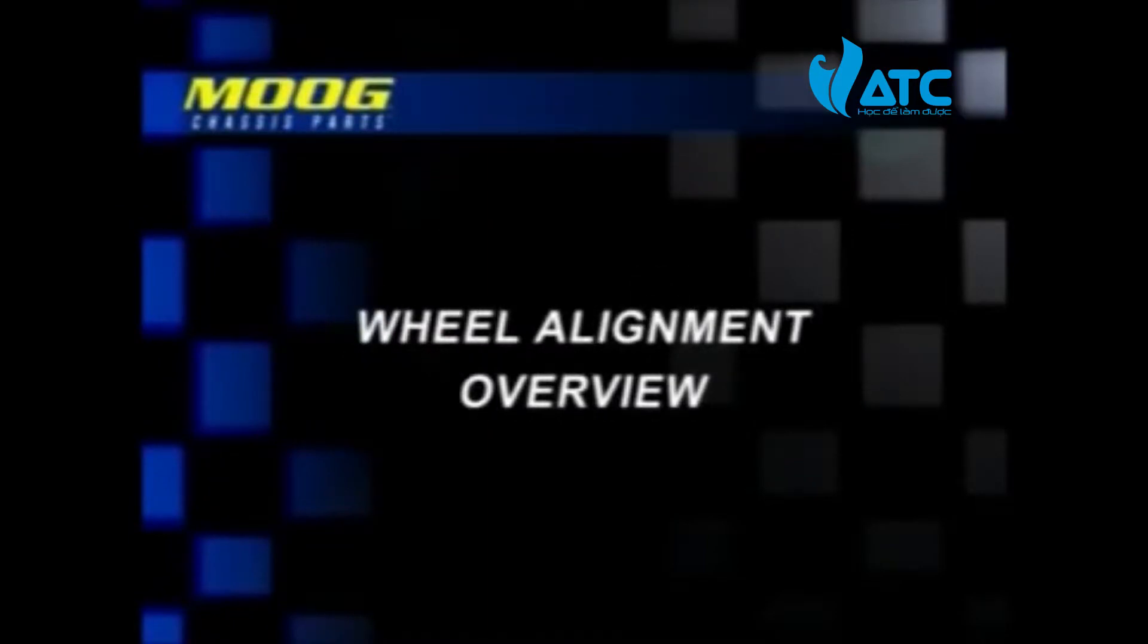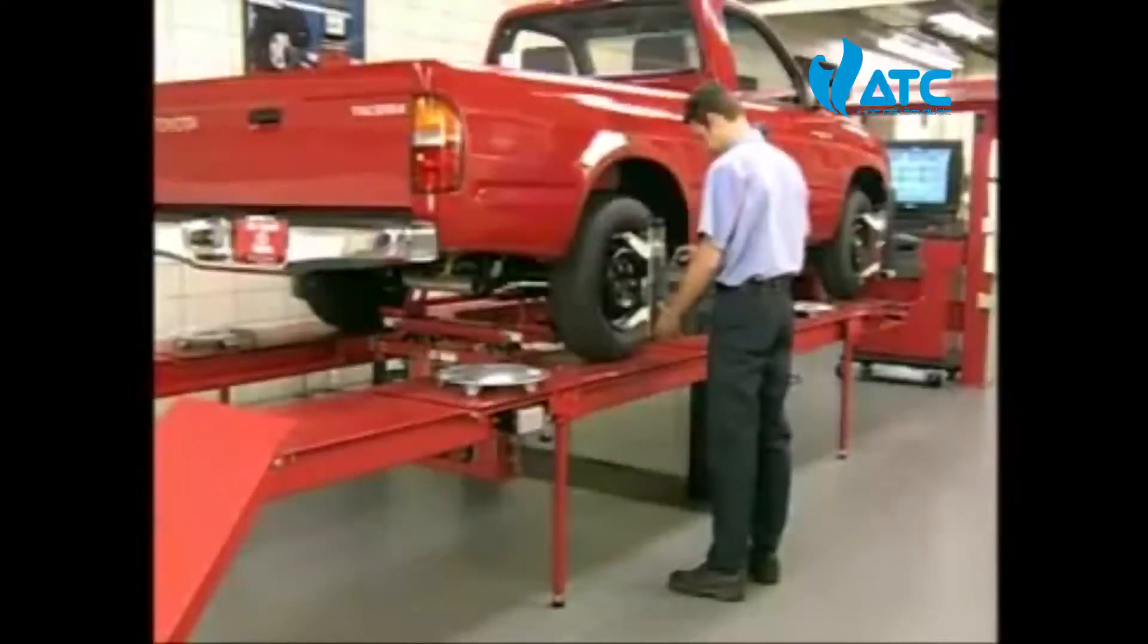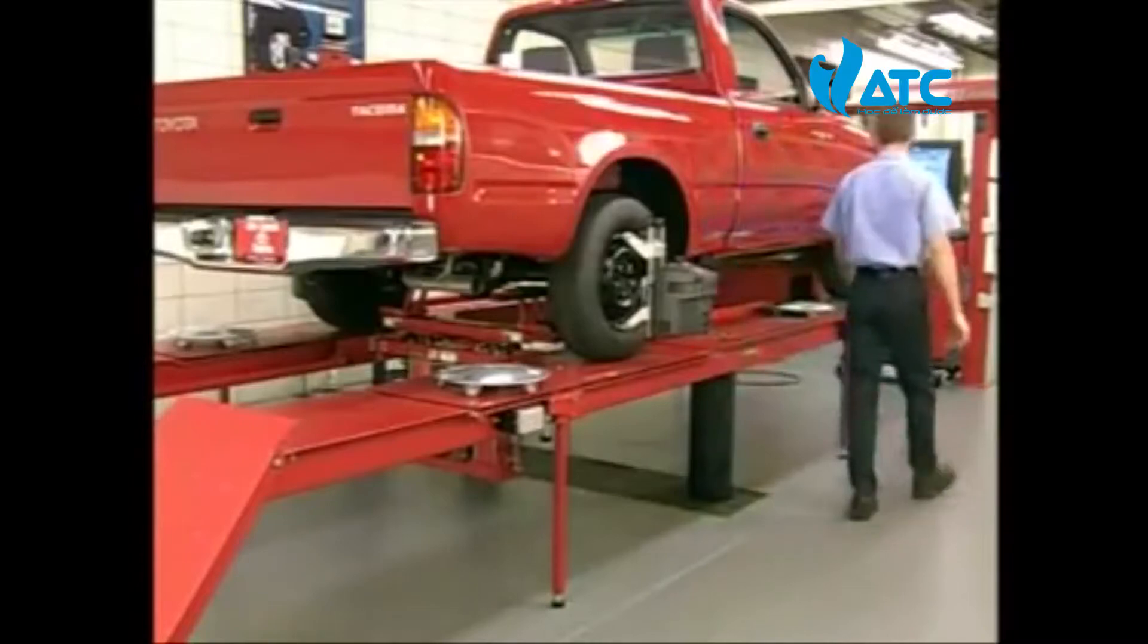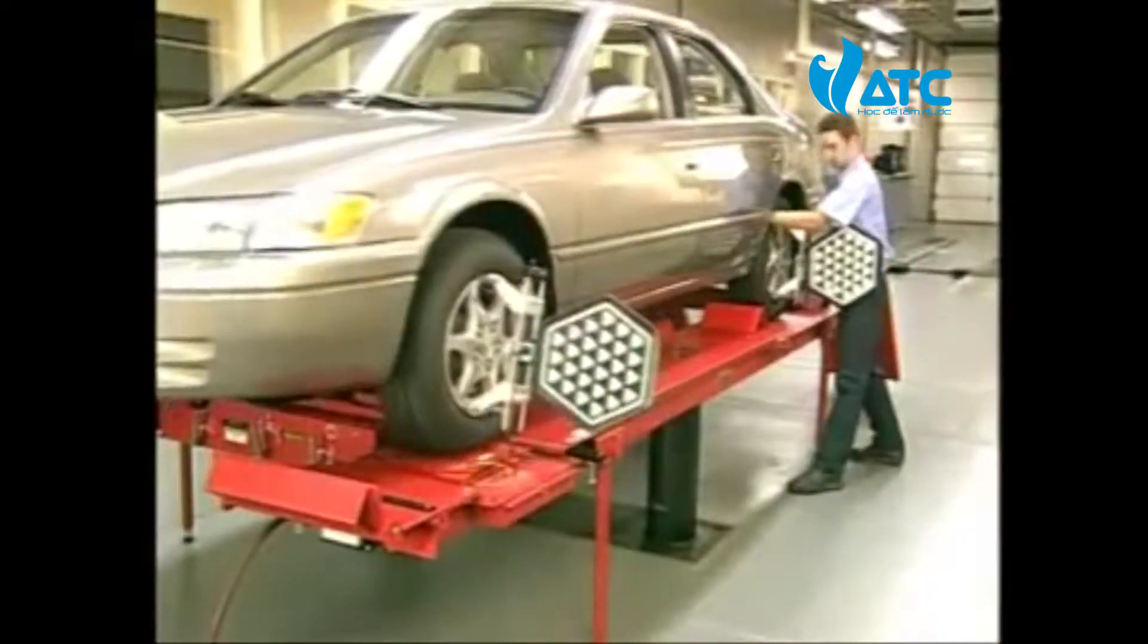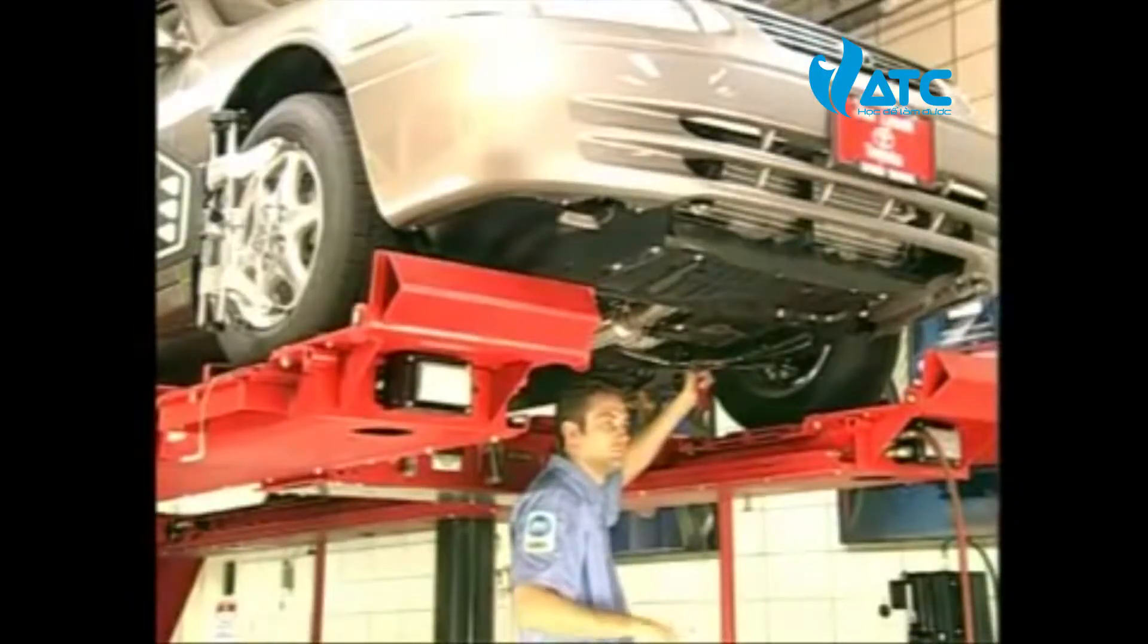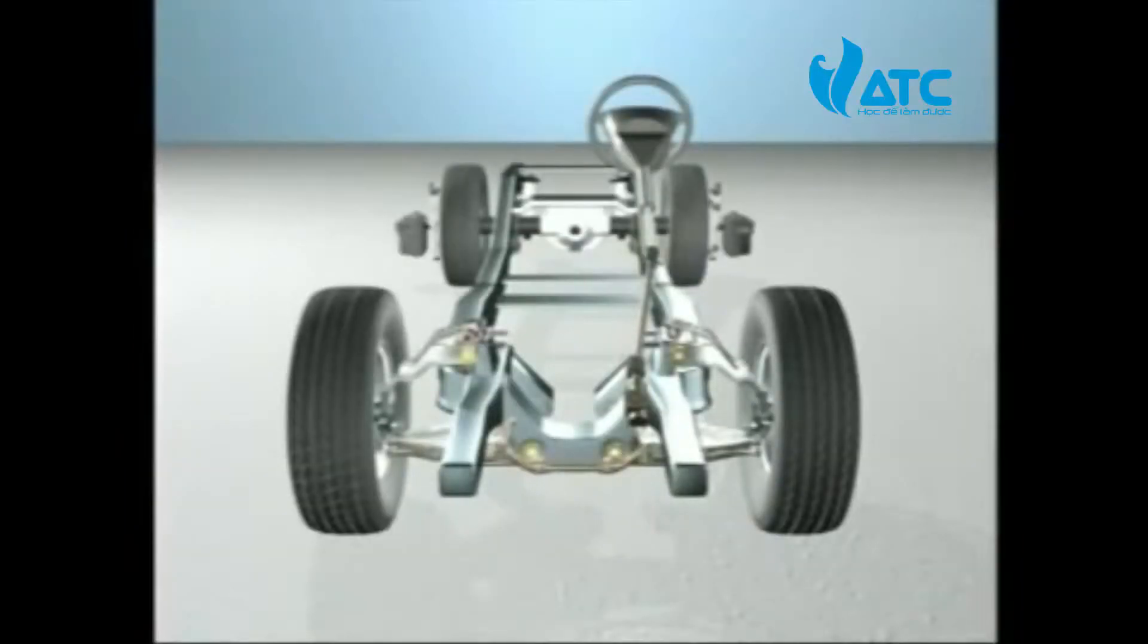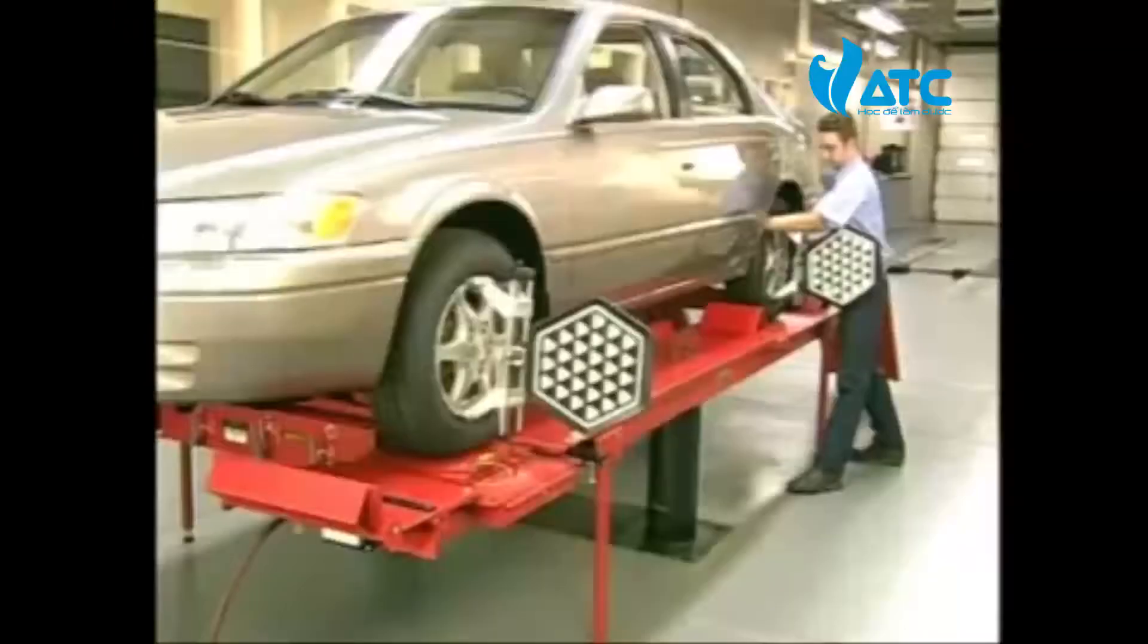Wheel alignment overview. Wheel alignment is the proper adjustment of all interrelated suspension angles. When done correctly, drivers will get the best overall handling and tire performance possible. The most common types of wheel alignments performed today include thrust, four-wheel, and two-wheel alignment.